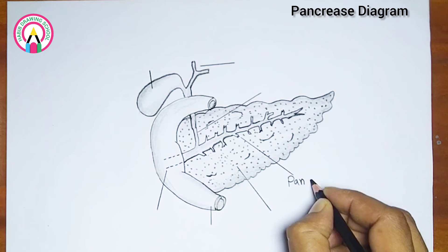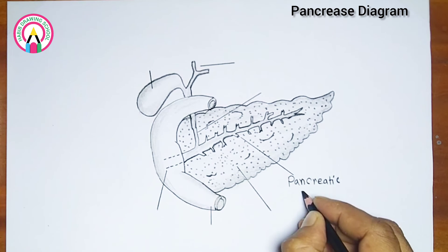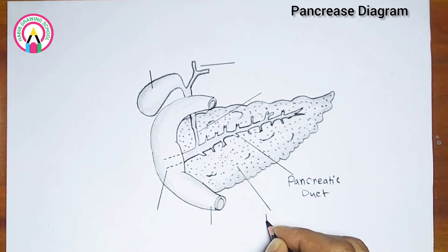Three: pancreatic ducts - the pancreas has a network of ducts that transport pancreatic juice containing digestive enzymes from the pancreas to the duodenum, where they help break down food.